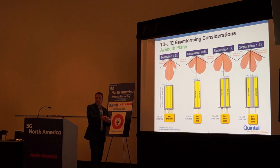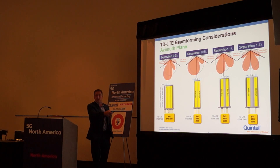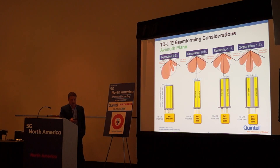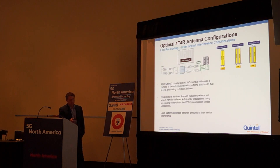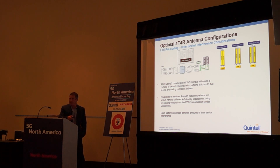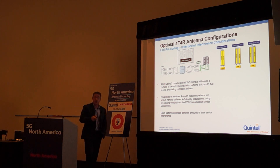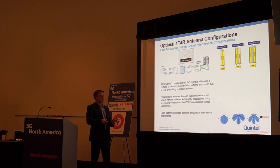I can increase that further — what about 1.4, 1.6 lambda? And this is what we explored. Let's talk about FDD. TDD has this nice ability to apply arbitrary beamforming weights across the columns. With FDD, you don't have that. You have codebooks for precoding, so you end up with defined patterns of beamforming.